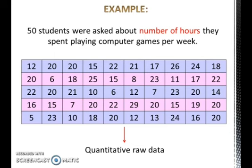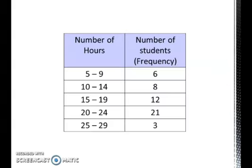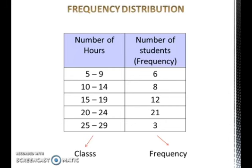Quantitative raw data can be simplified and organized into a table that lists the values in the data grouped into ranges or classes in one column, and the number of occurrences or frequency of each class in another column. This table is called a frequency distribution of quantitative data. From this frequency distribution, we can draw a histogram, a frequency polygon, and an ogive.